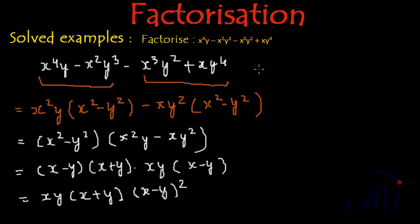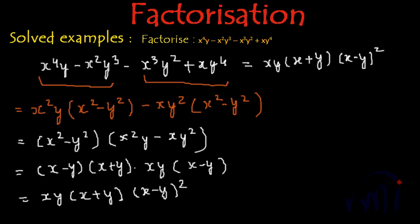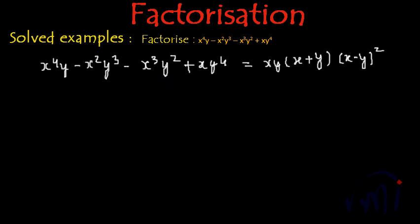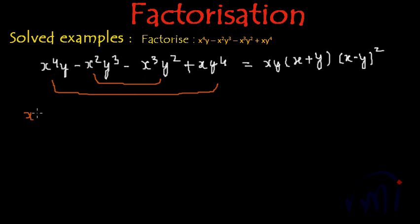That is one method, and if you want we can solve it using one more method. The result we have got is xy multiplied by x plus y multiplied by x minus y whole square. For the next method, we can pair these two terms and these two terms differently. From the first pair we can take xy common and inside the bracket we will have x cubed plus y cubed.